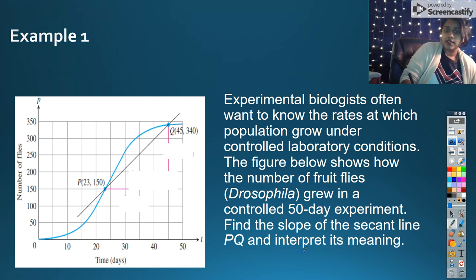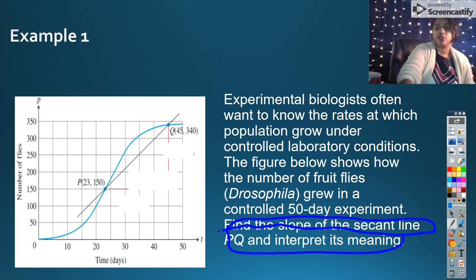So the only thing that mattered to me was this little line down here, right? Find the slope of the secant line of P and Q and interpret its meaning.